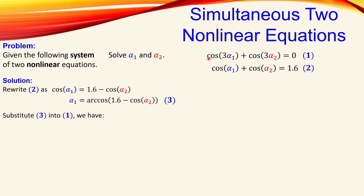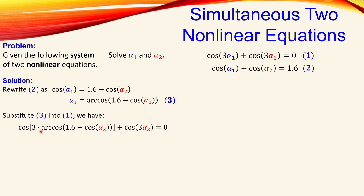Now we substitute equation 3 into equation 1, which we haven't used yet. Wherever α₁ appears in equation 1, we replace it with the expression from equation 3. The reason we do this is that the result will contain only one unknown, α₂, which can then be solved — whereas having two unknowns makes it unsolvable directly by hand.